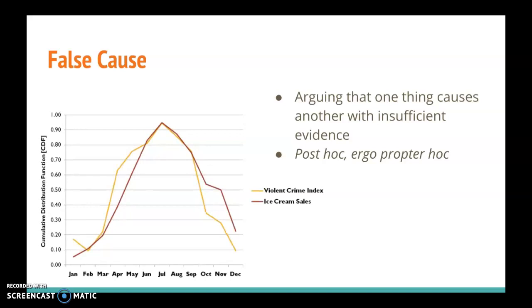Take a look at this graph. The red line indicates ice cream sales and how they peak and fall over time, whereas the orange line indicates violent crime index. And you can see that ice cream sales and violent crime tend to rise and peak and fall together.